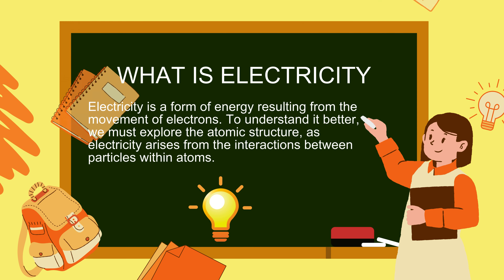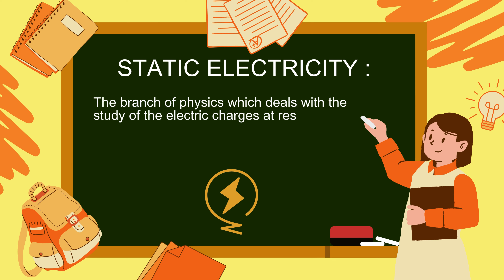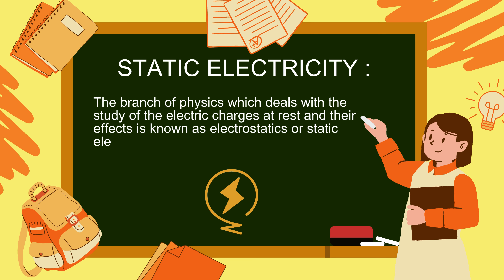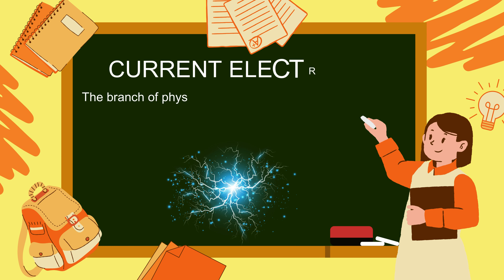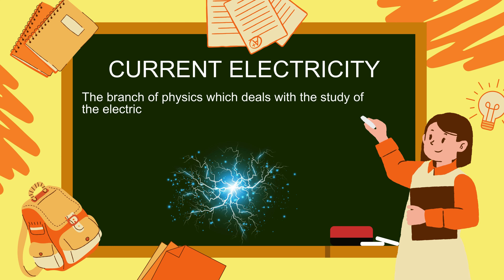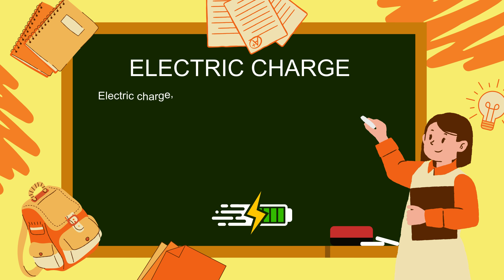Static electricity: the branch of physics which deals with the study of electric charges at rest and their effects is known as electrostatics or static electricity. Current electricity: the branch of physics which deals with the study of electric charges in motion and their effects is known as current electricity.